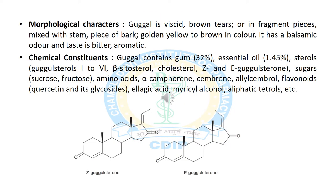Now we will discuss the morphological characters of Gugul. It is viscid and tear in shape. It is dark brown or yellow in color and has a balsamic odor and bitter aromatic taste. The chemical constituents of Gugul include gum, essential oil and various sterols like gugul sterols, beta-sitosterol, cholesterol and E-gugul sterols. It also contains sugars like sucrose and fructose, amino acids, alpha-camphorene and quercetin as a flavonoid compound. It also contains ellagic acid and aliphatic tetrols.